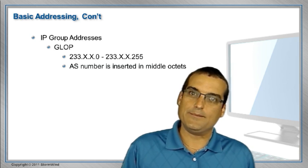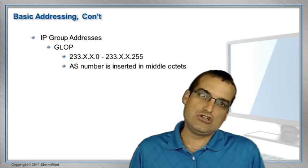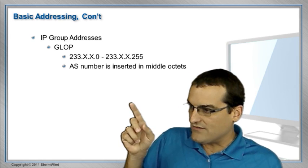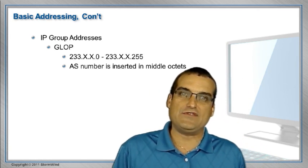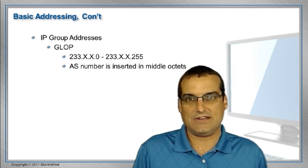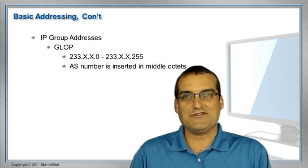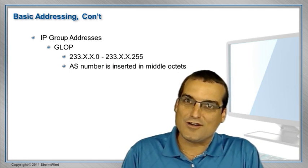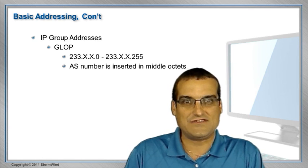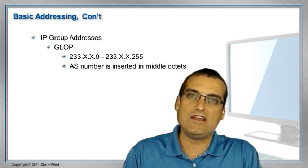One of the issues with GLOP addressing is that once we put our AS number in the middle octets, we don't have a lot of addresses left — just 255 in that last octet for identifying particular multicast applications. Everything we've talked about in this video on these important multicast addresses is defined for you in the RFCs. Check out RFCs on multicast addressing to get more information.